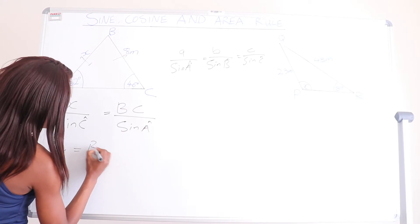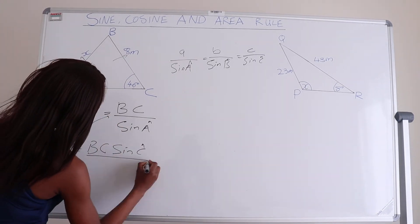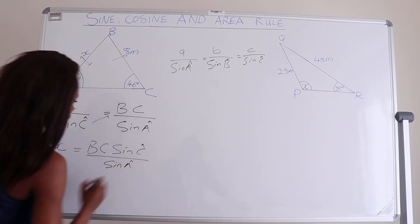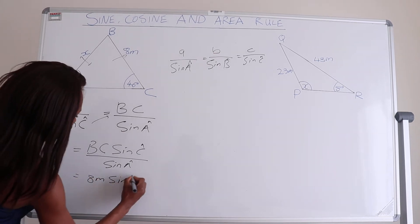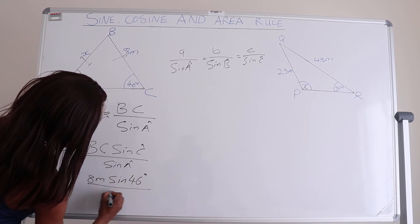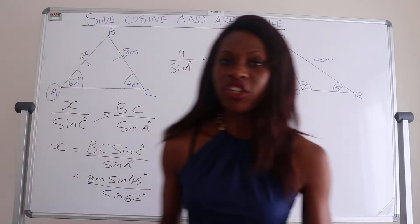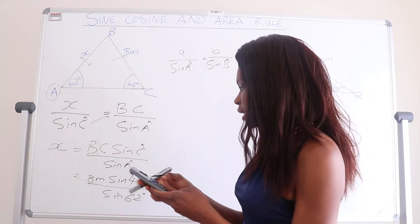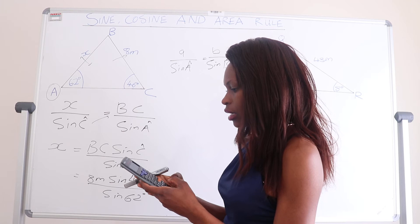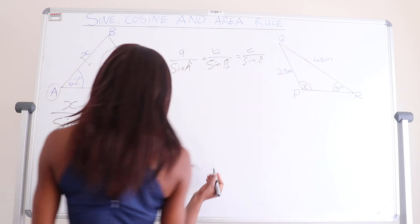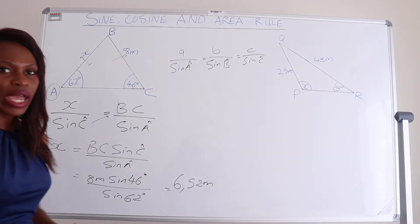So x equals BC multiplied by sine of angle C divided by sine of angle A. Substituting values: x equals 8 meters times sine of 46 degrees divided by sine of 62 degrees. Punching that into the calculator gives 6.52 meters. So the value of x in triangle ABC is 6.52 meters.